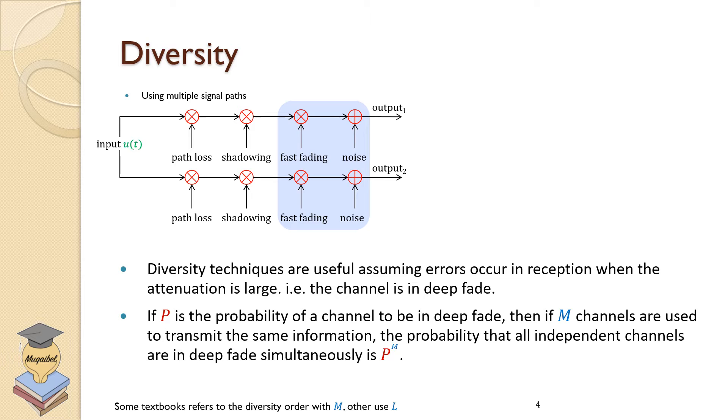The following figure shows an example of diversity at the receiver side. We are transmitting one signal here, u(t). The signal goes through two different paths. When the signal travels it will be subject to path loss, shadowing, and then fast fading multipath, in addition to noise.